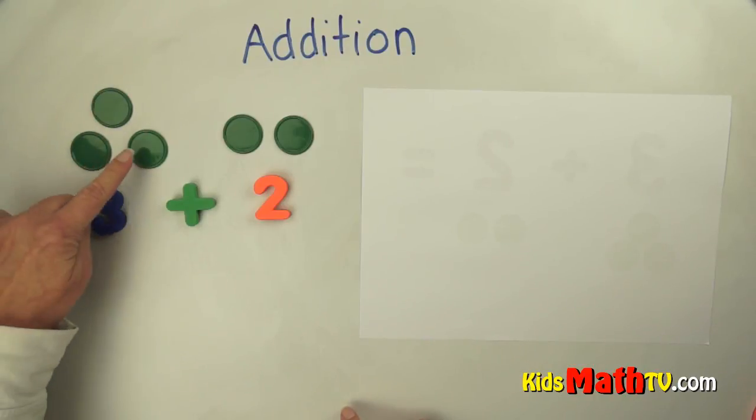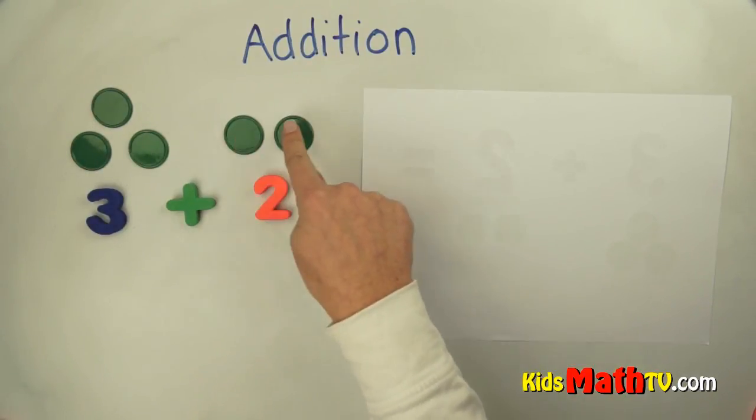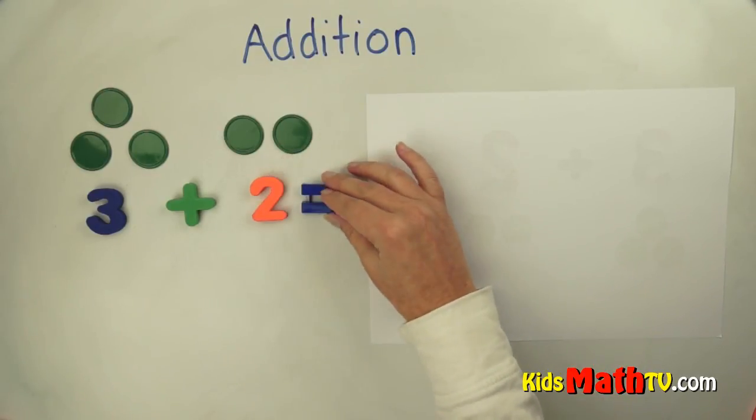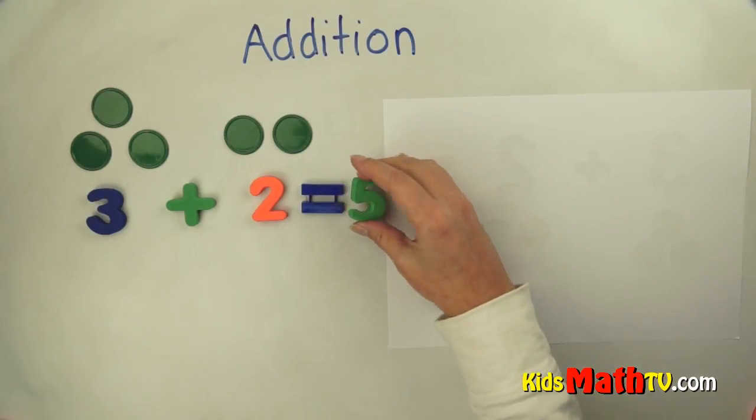Let's count how many all together. One, two, three, four, five. There are five. There's the equals. That means how many there are. Five.